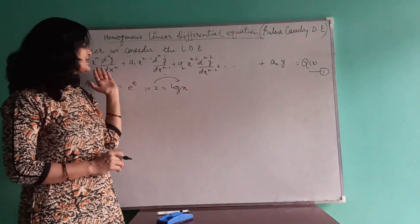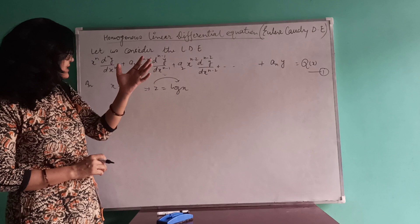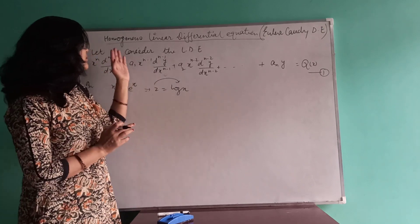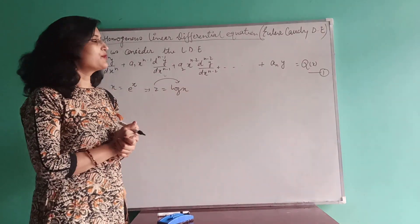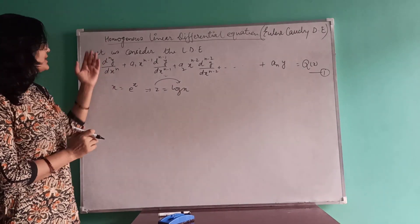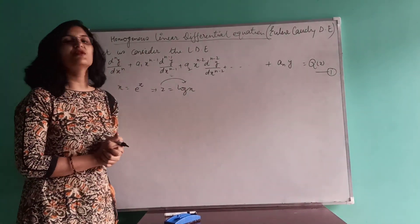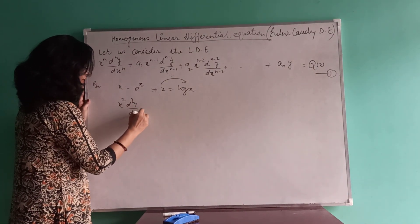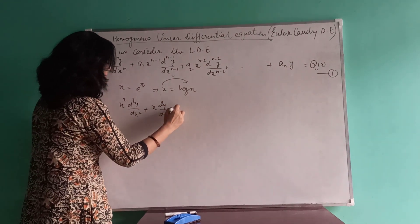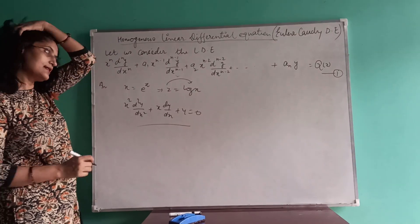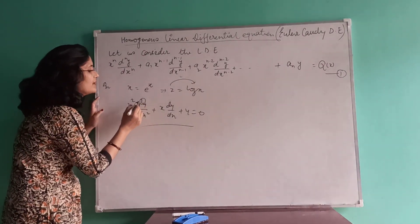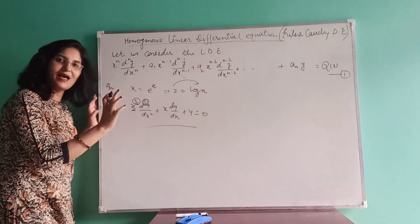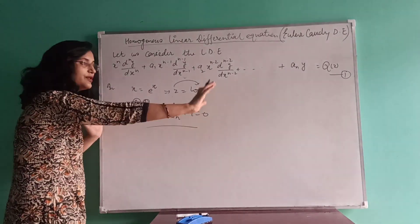Here I have considered a linear differential equation of nth order with variable coefficient. As you can see, the derivative is multiplied with the independent variable. Homogeneous is a special case of linear differential equation with variable coefficients. You can recognize it when the derivative is multiplied with the independent variable and the derivative's order and the independent variable's power are both the same and multiplied together throughout the equation.